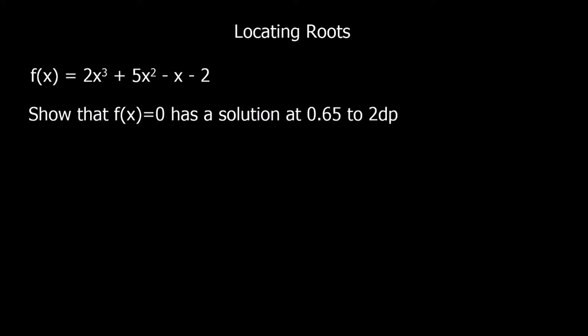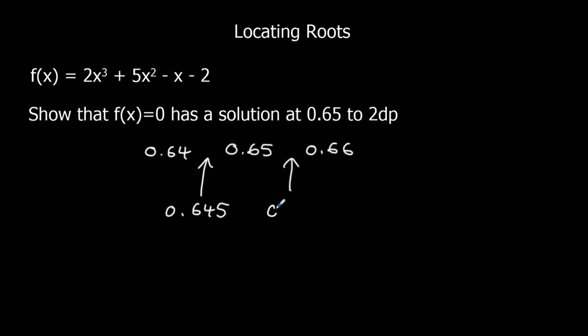This one's a different type of question, because we've got to show that the solution is 0.65 to 2 decimal places. When we get a question like this, we need to look at the bounds — the upper bound and the lower bound. If it's 0.65 to 2 decimal places, the one below is 0.64 and the one above is 0.66. So the lower bound is 0.645 and the upper bound is 0.655. We need to show there's a change of sign between 0.645 and 0.655, then the solution must be 0.65 to 2 decimal places.